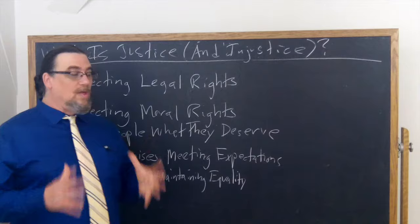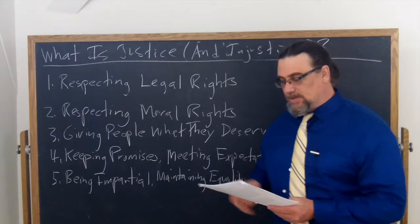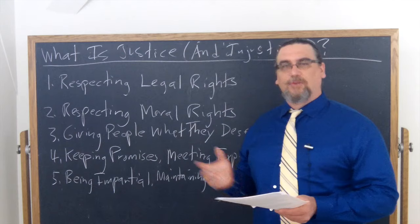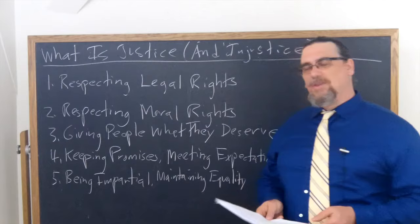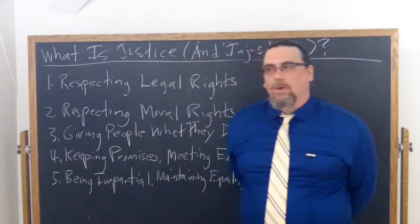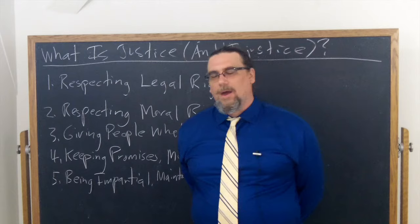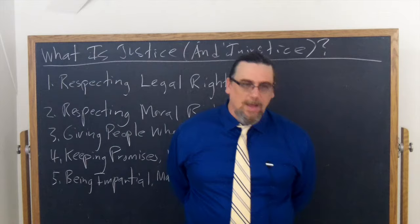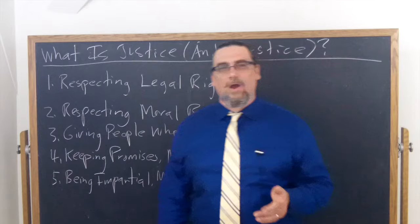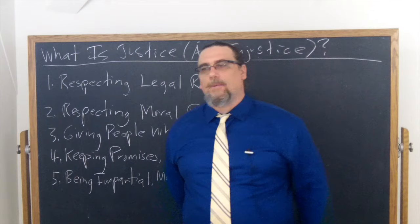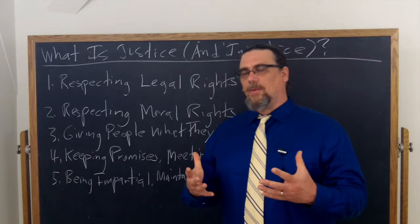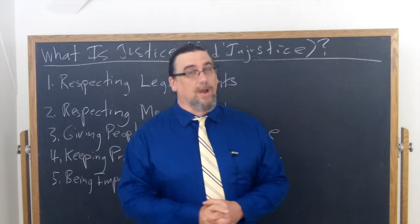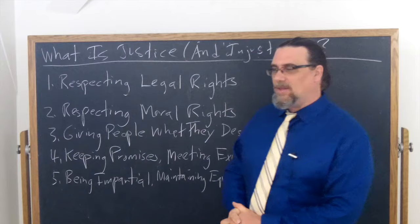So we want to look at what he actually says. He says it's considered unjust to deprive anyone of his personal liberty — that is, his freedom — his property, or any other thing which belongs to him by law. There are a lot of things that fall under property: house, car, money, whether as cash, a credit card, or something in a bank account. All of those things are property. There are also other things we might talk about as rights that are legally recognized — like the right to privacy, one that took a lot of hashing out over the years, at least here in the United States with our Supreme Court.